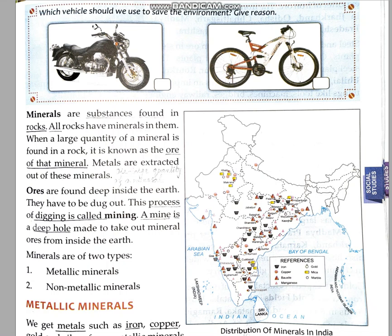Suppose you want to enjoy poori aloo and you ask your mother: mama, aaj poori aloo khanne ka dil hai. So how will your mother prepare it? She will take raw potatoes and prepare the vegetable, and for the puri she will take flour (aata), knead it, and prepare the puri. That raw potato and unkneaded flour is the kaccha maal for your dish. In the same way, ores are found in rocks in large quantities and then metals are extracted from these minerals. So minerals are found in the form of ore and from the minerals, metals are extracted.